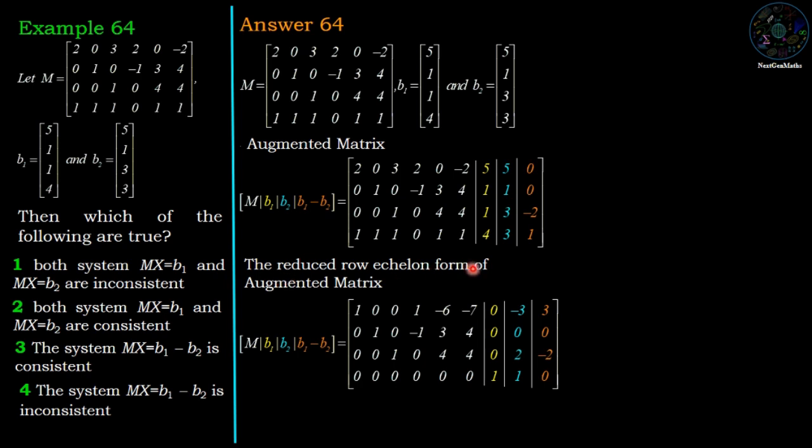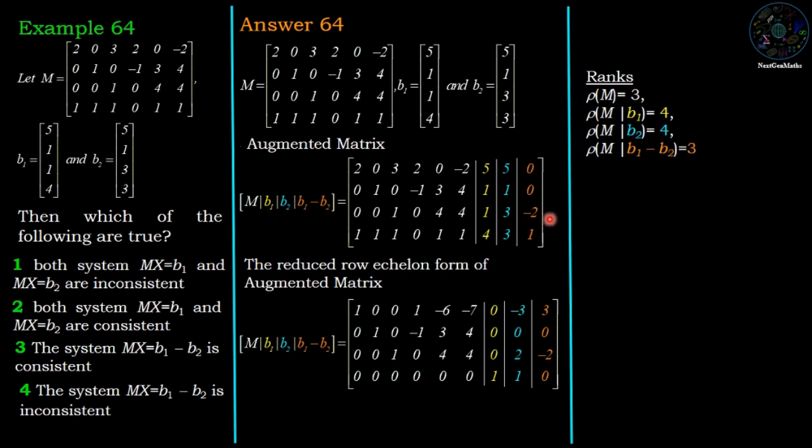So the reduced row echelon form of the augmented matrix M with B1, B2, and B1 minus B2 is in this form. We can see that rank of matrix M is 3, because for this matrix M we have only 3 non-zero rows and the 4th row is 0.